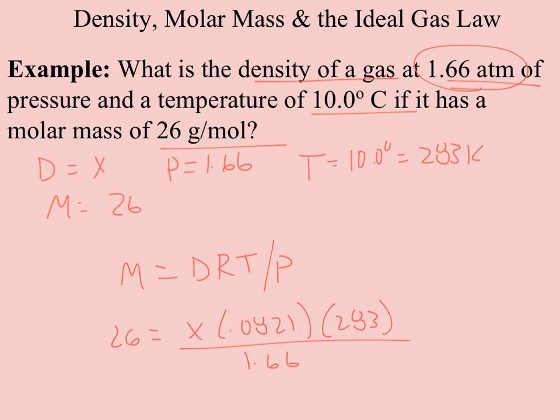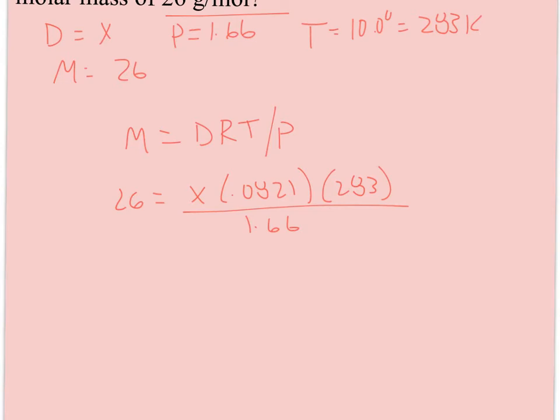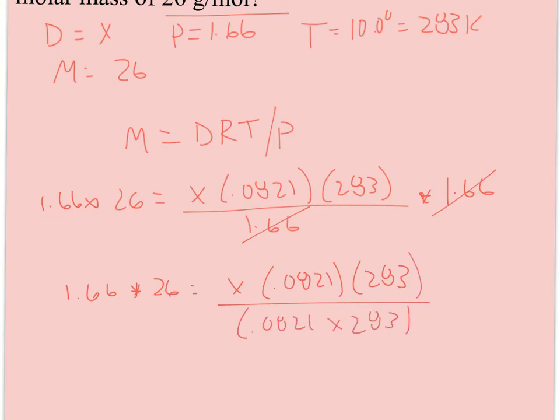So how do I solve for this one? Well, I need to get D all by itself. And some of you maybe like to rearrange before you plug the numbers in. I usually plug the numbers in first. So I'm going to multiply both sides by the 1.66. So 1.66 times 26 equals X times 0.0821 times 283. And these have now canceled out. And then I have to divide by the 0.0821 times the 283 on each side. And then finally I can solve for X. And I'm coming up with a density of 1.86. And what's my label going to be? Well remember density is mass over volume and the mass is given in grams and the volume in liters. So my correct unit would be grams per liter.